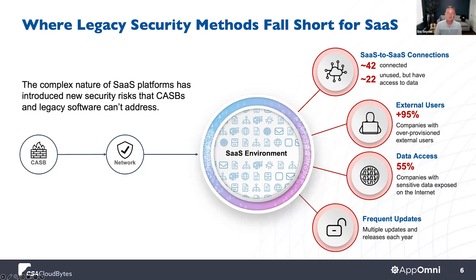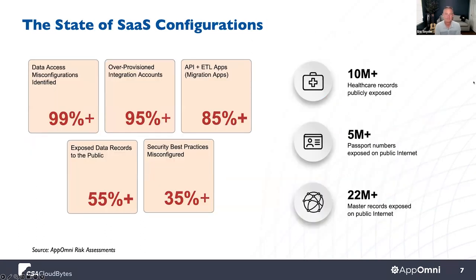Okay, then we can move on to our next topic of discussion, which is really the state of SaaS configurations. There are a lot of numbers on this slide, but overall, what we're really talking about here is just the mass volume of information that can be made available to the public internet. And these are some of the things that we've seen within some of our customers. Brian, do you have any points on this?